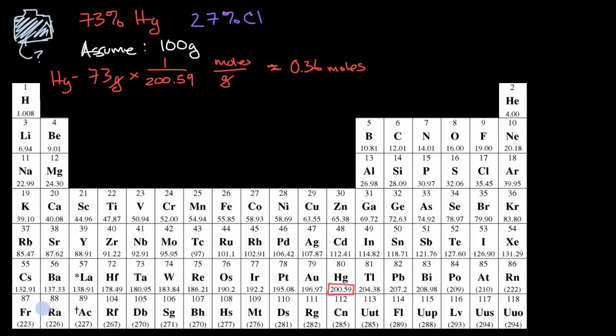And I can do the same thing with chlorine. Chlorine, if I have 27% by mass, 27% of 100, which I'm assuming, is 27 grams. And then how many grams per mole? If I have one mole for chlorine, on average, on Earth, the average atomic mass is 35.45 grams.